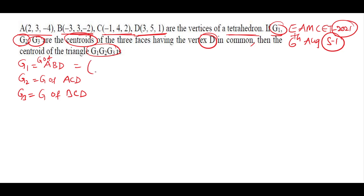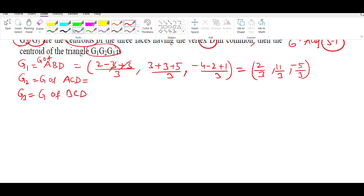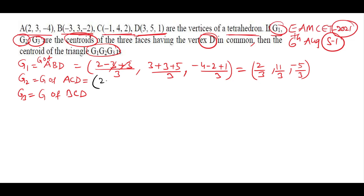Finding G1: centroid of triangle ABD. Using centroid formula (x1+x2+x3)/3, (y1+y2+y3)/3, (z1+z2+z3)/3: x-coordinate = (2 - 3 + 3)/3 = 2/3; y-coordinate = (3 + 3 + 5)/3 = 11/3; z-coordinate = (-4 - 2 + 1)/3 = -5/3. So G1 = (2/3, 11/3, -5/3).